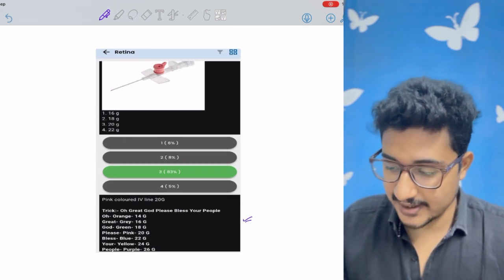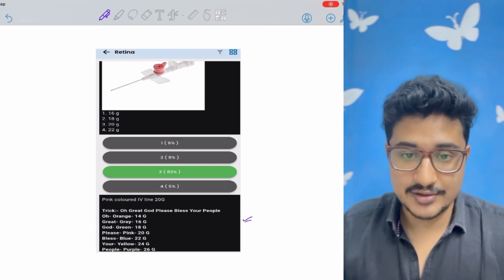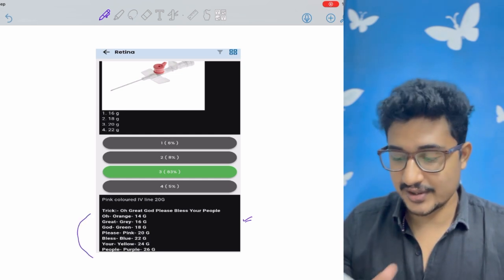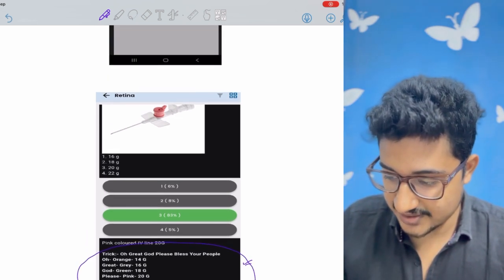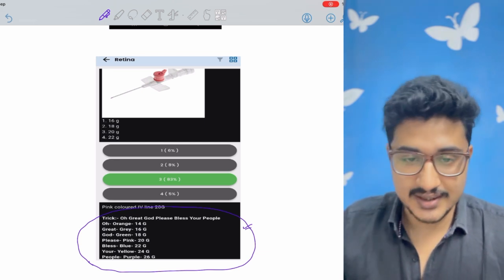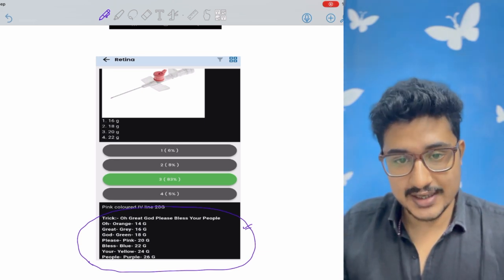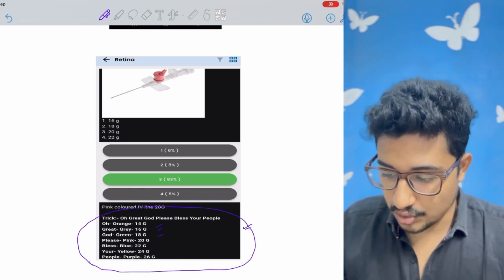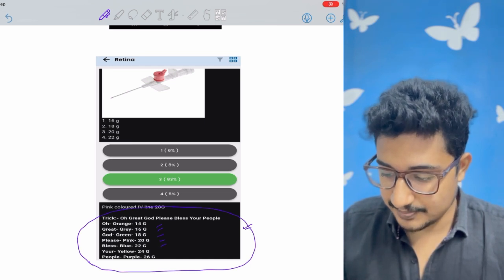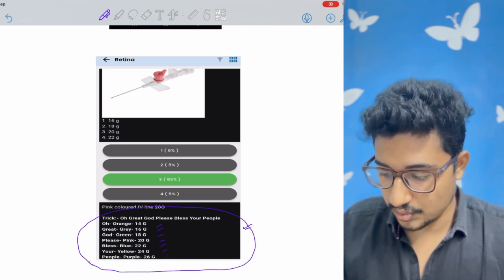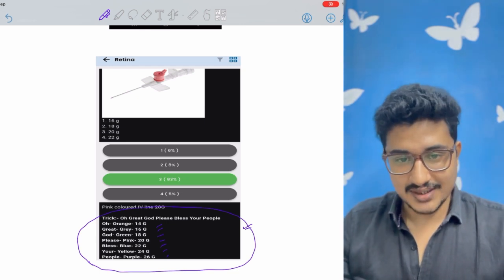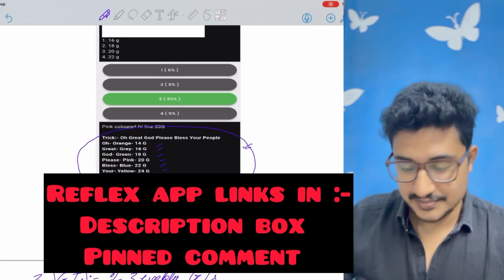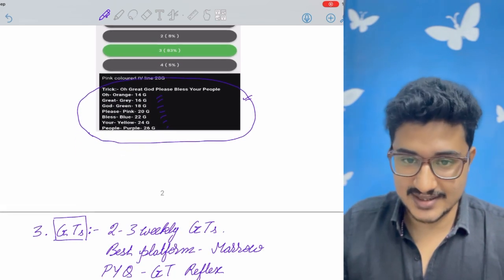And when I review it, I am adding some extra points. Like you know, in Reflex app, Dr. Aditya Gupta sir's voice recordings are awesome for understanding. So I also add some tricks, like cannula gauge. So the trick is, oh great God, please bless your people. So O for orange, G great for gray, God for green, please for pink, bless for blue, your yellow and people purple. So I use this technique and I never forget the gauges. So like this kind of features you would get in the reflex app at a nominal price.